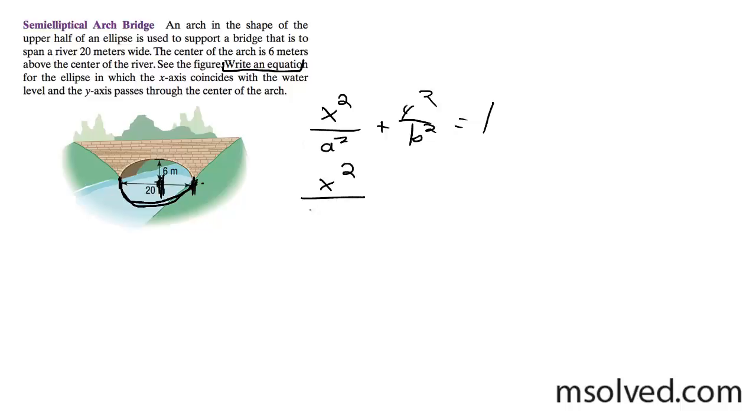So for x, it would just be 10 squared. From the point here to the bridge arc, it's 6 feet, so that's 6 squared. And our equation becomes x squared over 100 plus y squared over 36 equals 1. That is it.